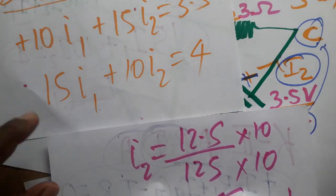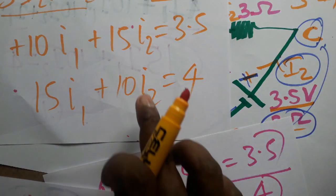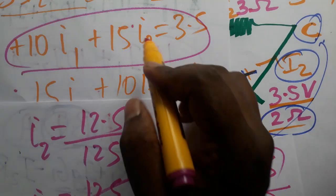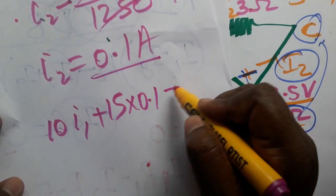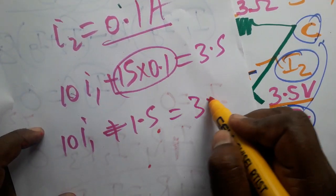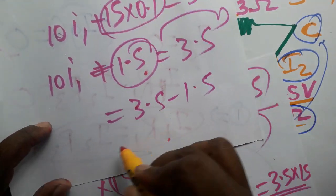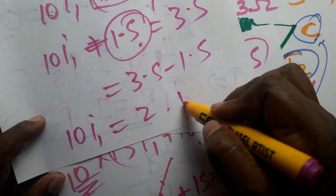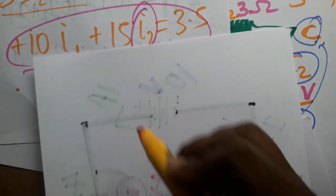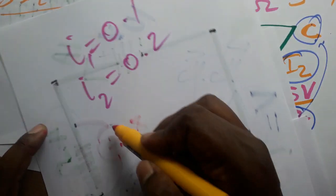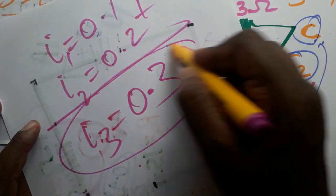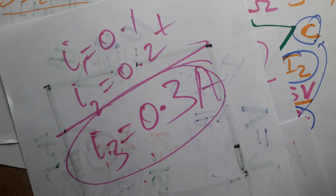Substituting I2 = 0.1 into Equation 2: 10·I1 + 15·(0.1) = 3.5, so 10·I1 + 1.5 = 3.5, giving 10·I1 = 2, so I1 = 0.2 ampere. Now I3 = I1 + I2 = 0.2 + 0.1 = 0.3 ampere. So the answers are I1 = 0.2 A, I2 = 0.1 A, and I3 = 0.3 A, found using Kirchhoff's laws. Please subscribe if you liked the channel — thank you.